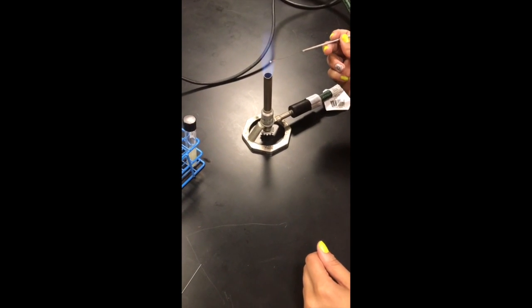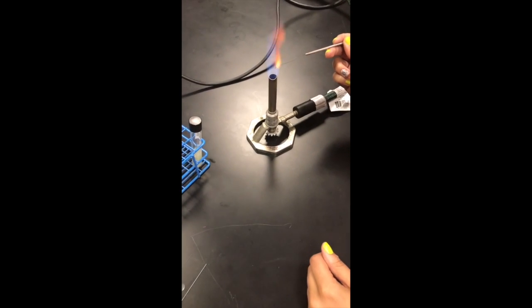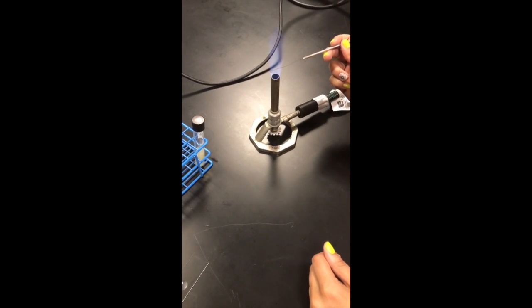Mix it into the DI water here. And then again, you'll want to flame your inoculating loop to get the bacteria off of it. And there it is.